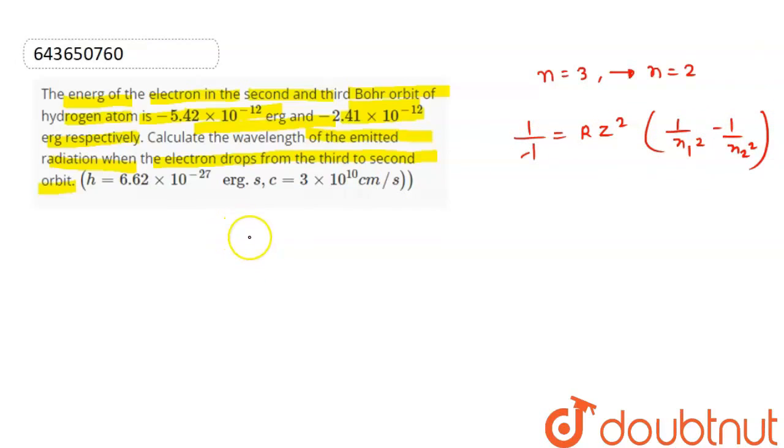See, 1 upon lambda, R की value होती है 109737. And here for hydrogen atom, Z की value क्या लेनी पड़ेगी? 1. 1 square into 1 upon N1. N1 की square क्या है? 1 upon 4 minus 1 upon. Now we need to take the LCM.